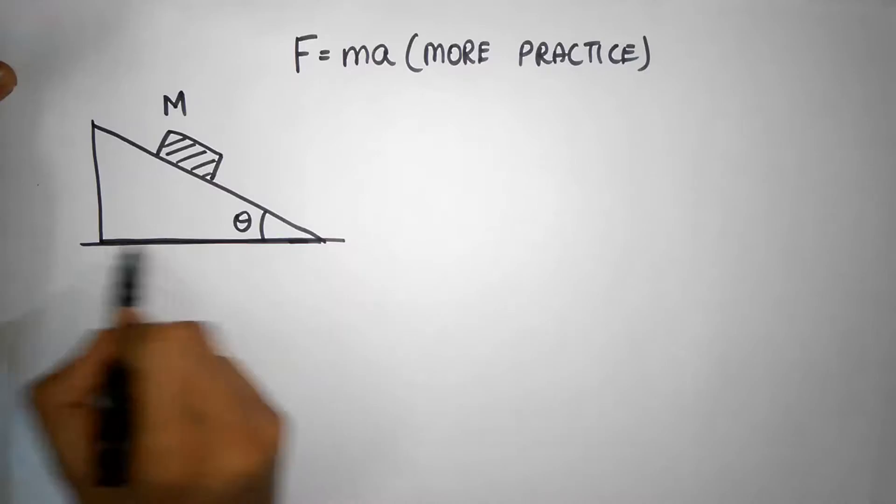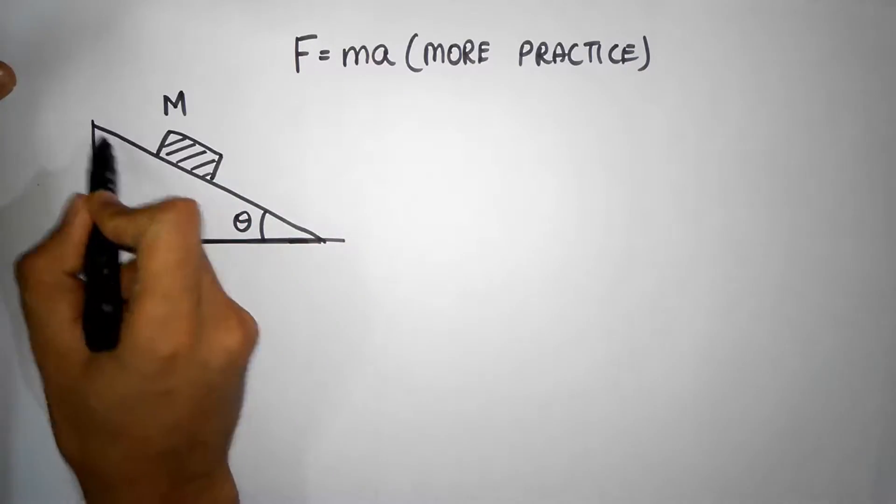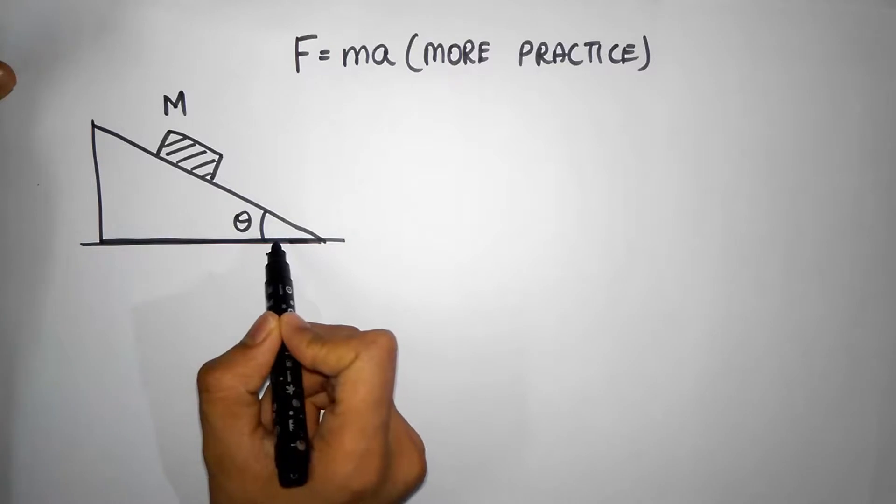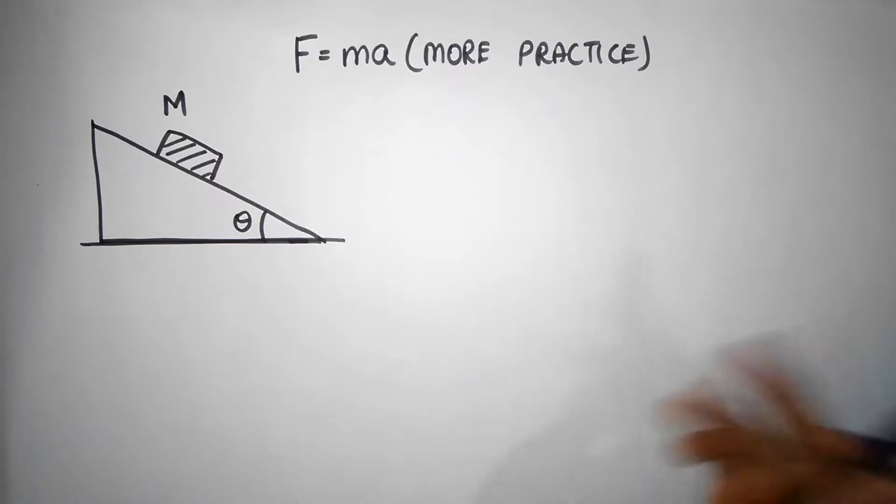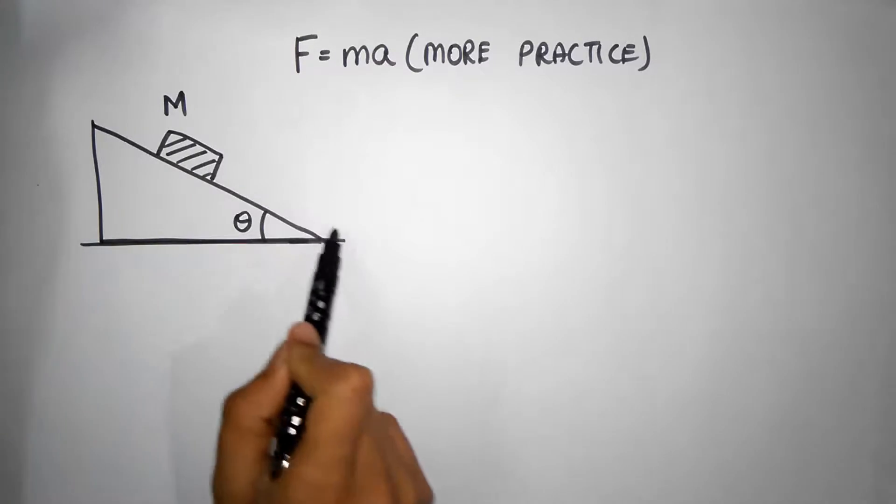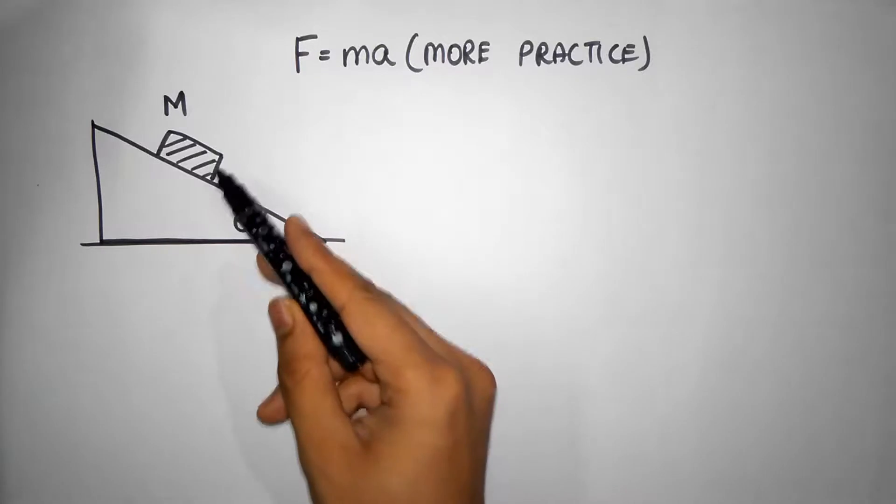That means this incline can't move, and imagine the surface of the incline is pretty much frictionless. So I'm going to release this mass and it's going to accelerate down, and I want to calculate what's the acceleration of that particular mass.